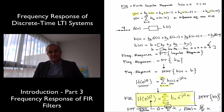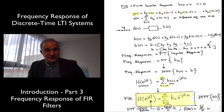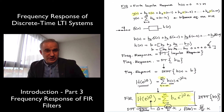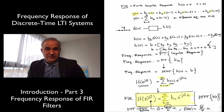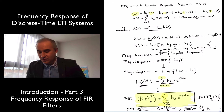So that is it. The frequency response of an FIR filter is the discrete time Fourier transform of the filter coefficients, and computationally you use the fast Fourier transform to compute it. Thank you. Let's do a couple of examples.